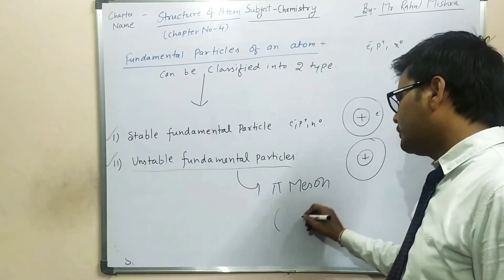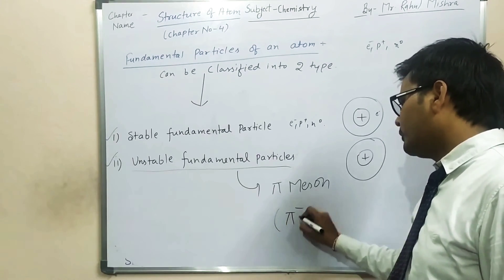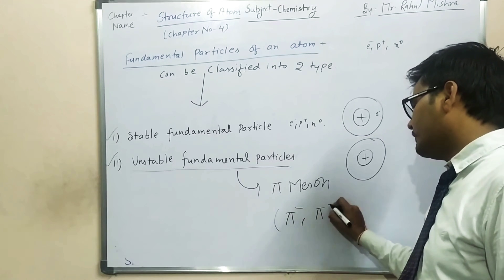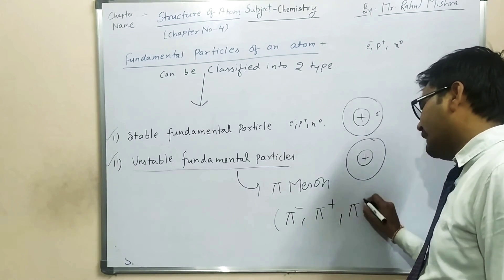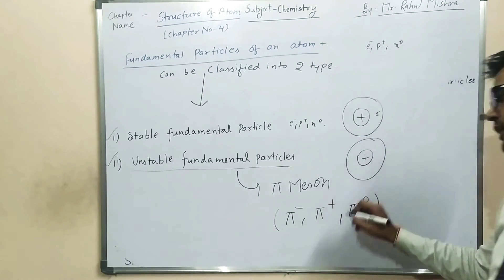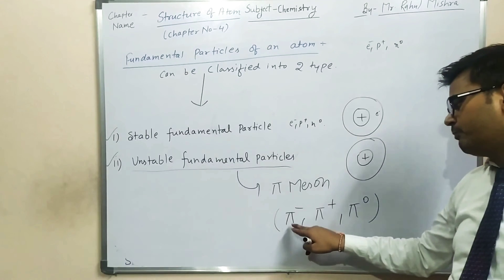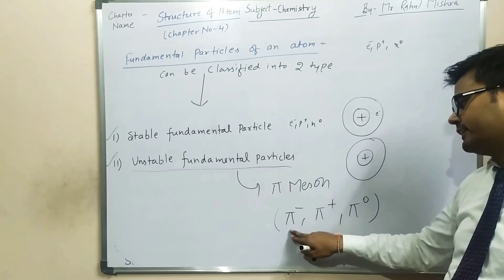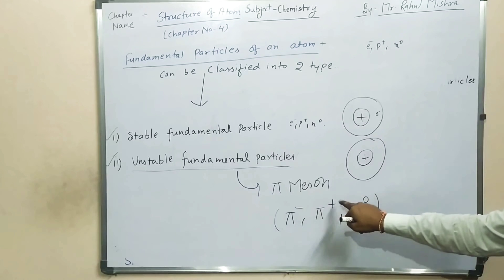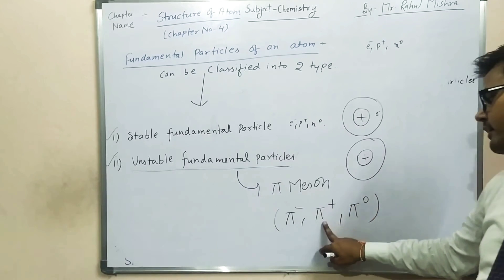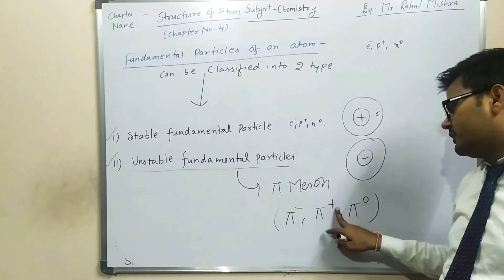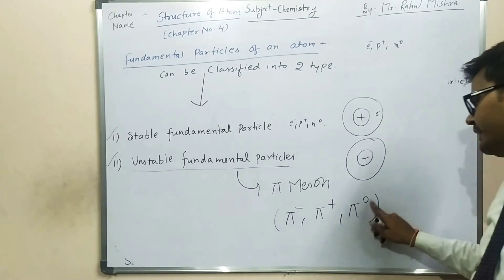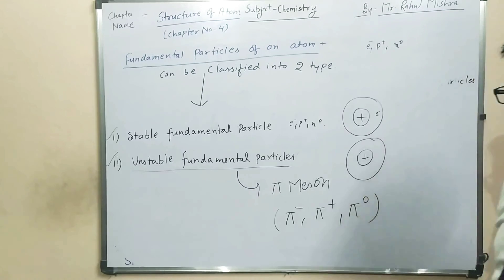तो π meson जो है ये तीन तरह के होते हैं: एक होता है π negative, एक होता है π positive, एक होता है π neutral. ऐसे पाई मेसान जिस पर negative charge है तो π negative, अगर positive है तो π positive, और अगर zero charge है तो π zero.